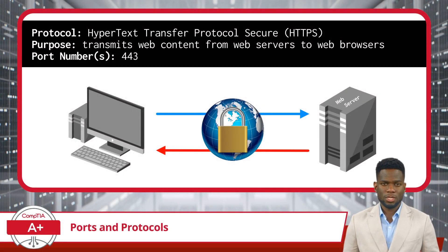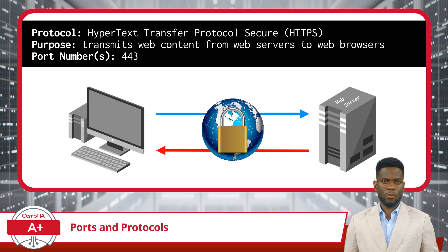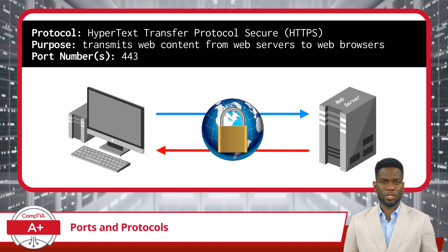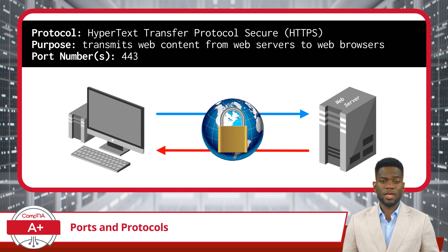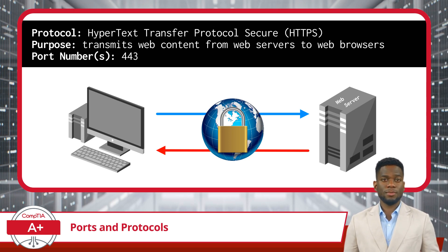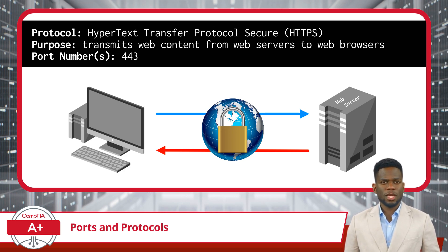Now let's revisit HTTP with added security: HTTPS, which stands for Hypertext Transfer Protocol Secure. It's essentially HTTP with an added layer of security for secure communication across the web. HTTPS encrypts data being sent and received, which is crucial for protecting sensitive information like login credentials, personal information, and payment details. The primary port for HTTPS is port 443. When you visit an HTTPS website, the connection is encrypted, preventing eavesdroppers from intercepting data and keeping your browsing and personal data private and secure.